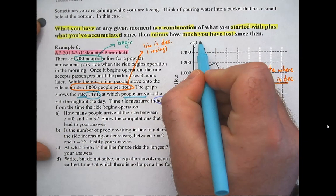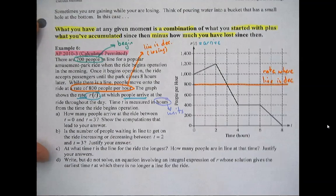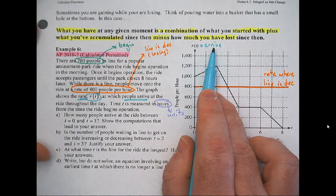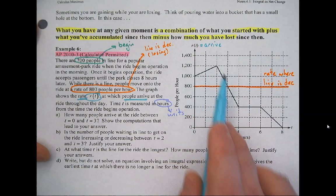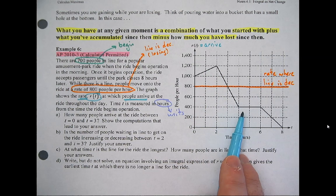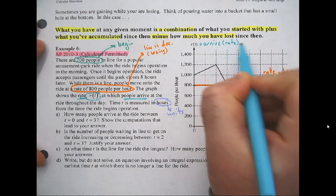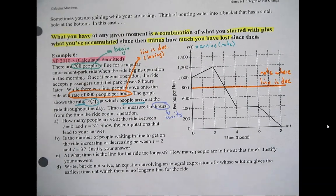So r(t) represents people arriving. How do we know if the line is getting longer or shorter? If you have more people arriving compared to how many people are getting out of line and onto the ride, the line is getting longer. If you have fewer people arriving than the rate at which they're put on the ride, it's going to be getting shorter. So r(t) is the rate at which people arrive — that's pretty much all the giveaways I saw.